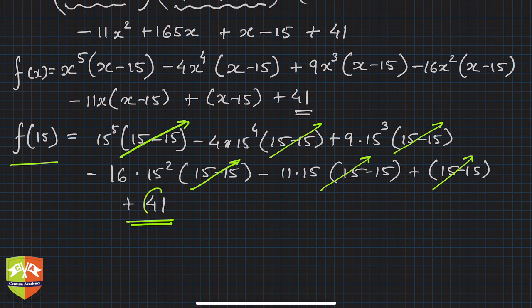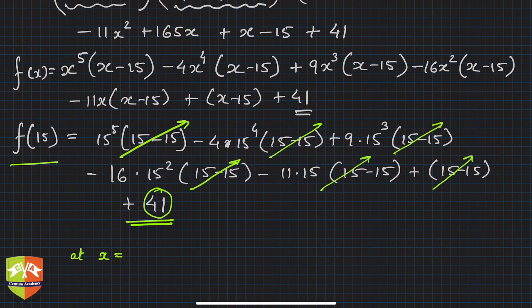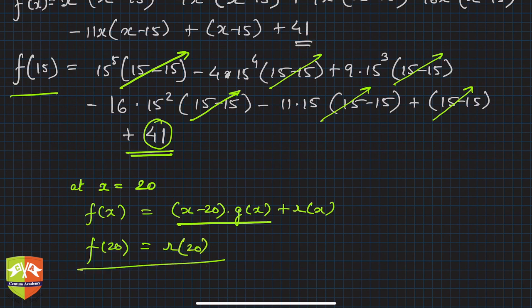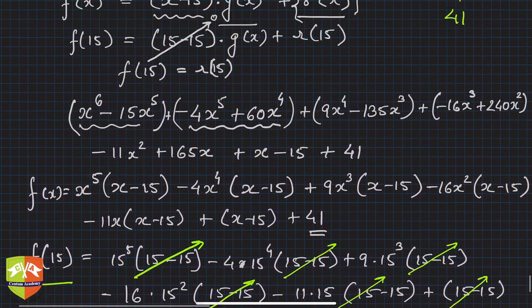The learning is: for such big polynomials, if you express the entire polynomial in terms of x minus 15, you can find the value easily. Tomorrow if you had to find the value at x equals to 20, you would express the entire f(x) in terms of x minus 20 times some g(x) plus r(x). Then f(20) will simply be the remainder when the entire polynomial is divided by x minus 20. This is the application of the remainder theorem, and you can use it for bigger calculations as well.